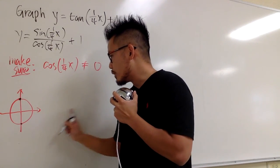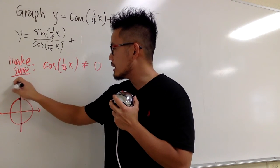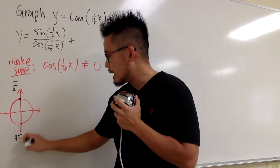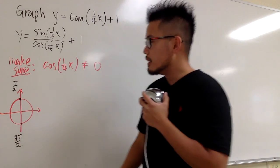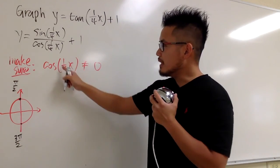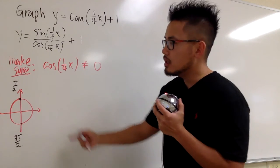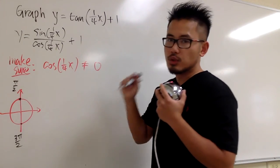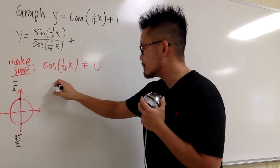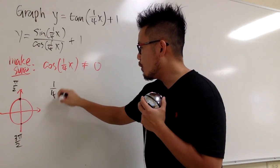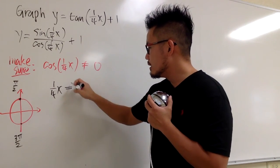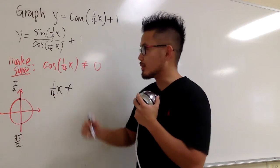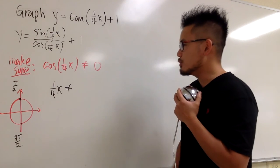Starting at 0 radians, turning to the top gives π/2, and turning to the bottom gives 3π/2. So we want the inside, which is 1/4 x, to not equal π/2 — and we follow the same condition going forward.